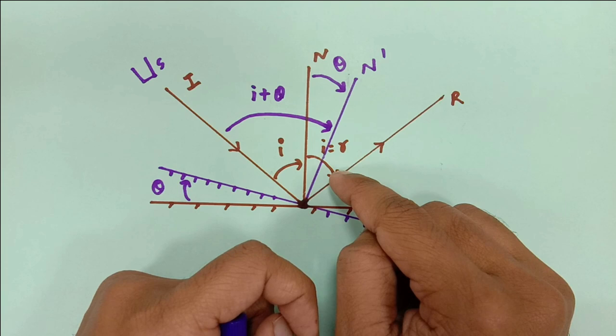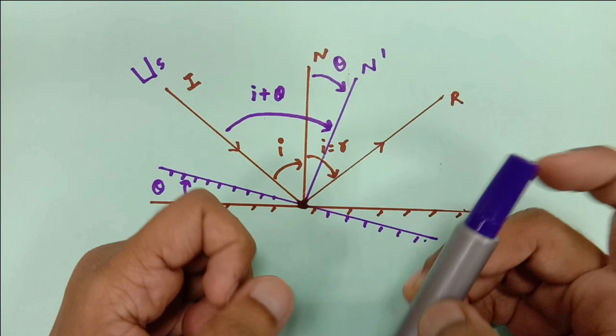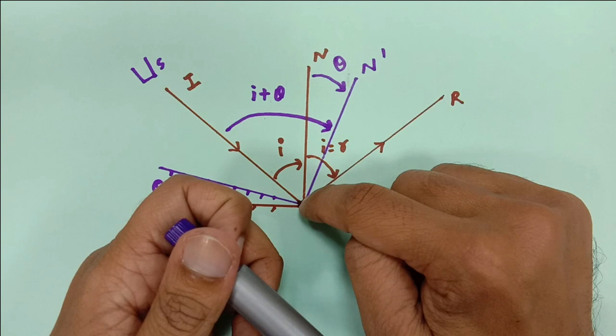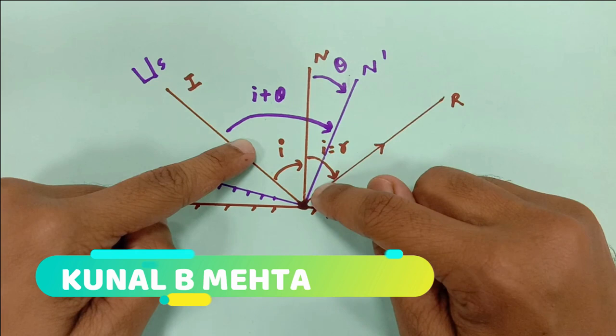That means the new reflected ray should turn down, because earlier the angle of incidence was less and angle of reflection was less. Now if the angle of incidence has increased, the angle of reflection must also increase, and the angle of reflection should be I plus theta from the normal.